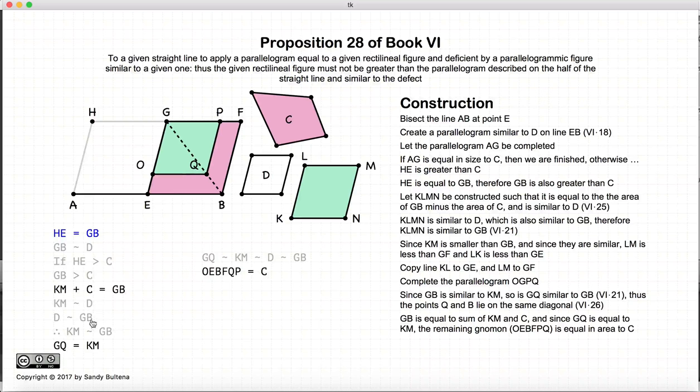So GQ is equal to KM, so therefore what is left over, this gnomon, will be equal to C. So again GB minus KM or GQ is equal to C, and it's just basic arithmetic.